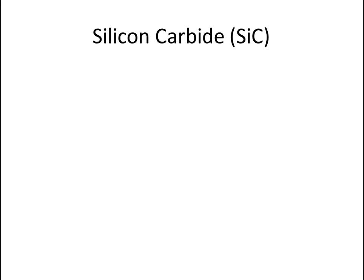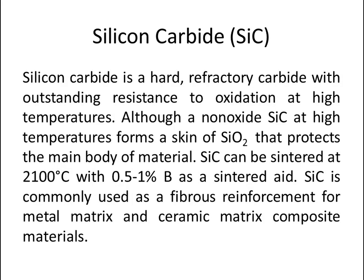Now let's talk about silicon carbide. Silicon carbide is a hard refractory carbide with outstanding resistance to oxidation at high temperatures. Although a non-oxide, at high temperatures silicon carbide forms a skin of silicon oxide that protects the main body of material. Silicon carbide can be sintered at 2100 degree Celsius with 0.5 to 1% boron as sintering aid. It is commonly used as a fibrous reinforcement for metal matrix and ceramic matrix composite materials.